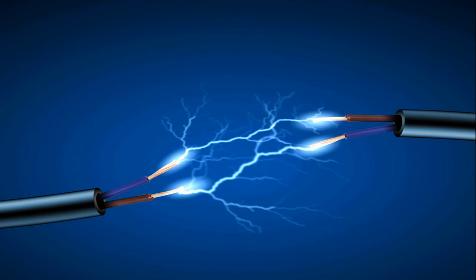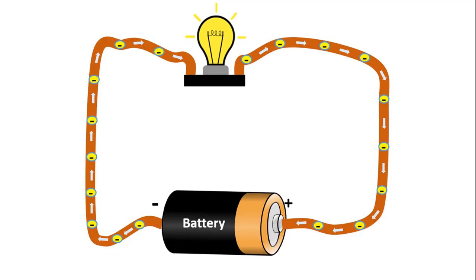Current is the flow of electrons in a circuit in one direction. To create electricity, we need electrons to flow in the same direction around a circuit.